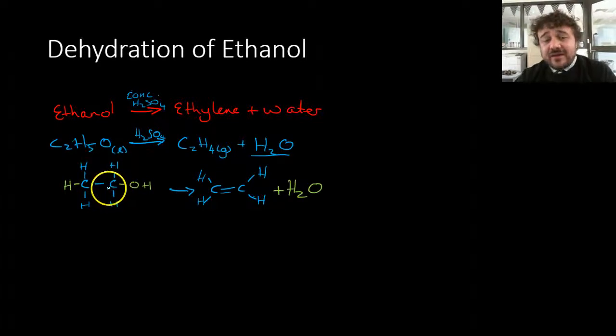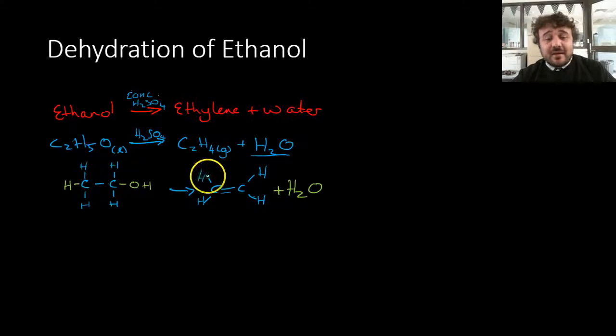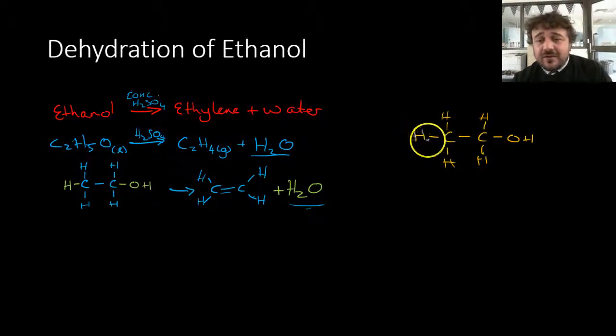And this is what it actually looks like, it breaks at the end bonds. So this hydrogen and this hydroxyl group get taken off by the sulfuric acid. Sulfuric acid remains unchanged because it's a catalyst, but it gets broken off and becomes a water molecule. They join together and a bond forms here, which makes that a double bond because they don't want to be a radical.